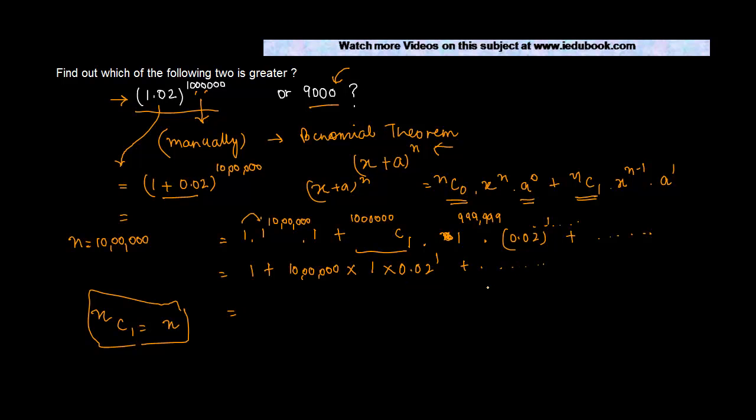Plus all other terms which might be coming. Please note that all these terms which are coming ahead are positive because both the terms here are positive, so we can simply write positive terms. 1 plus, now if you multiply a million by 0.02, what will you get? You will get 20,000.